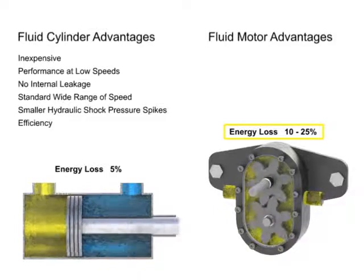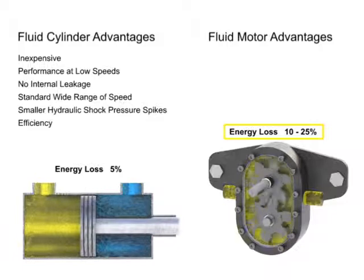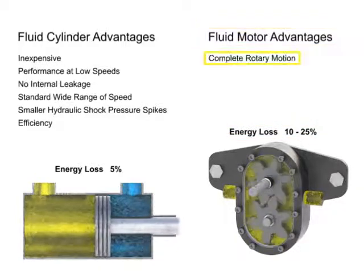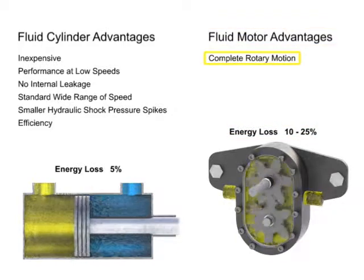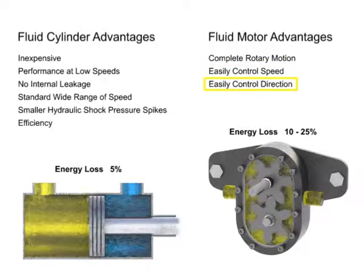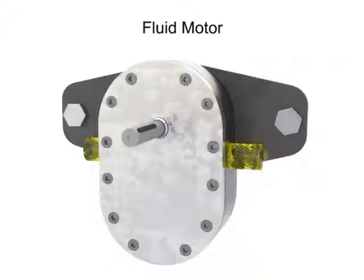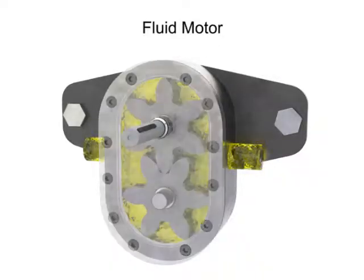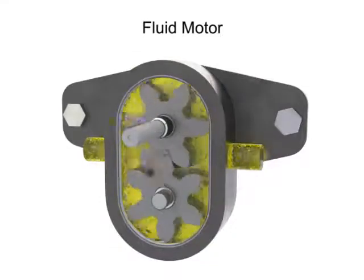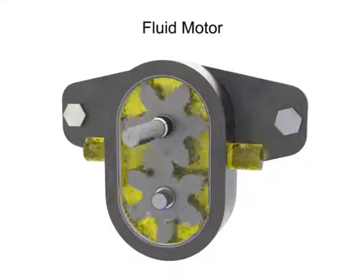However, despite all of these setbacks, fluid motors are advantageous due to their complete rotary motion and the ease with which their speed and direction can be controlled. On most fluid motor applications, it's necessary to have a motor which can accept high pressure on either port so that the motor can be reversed.